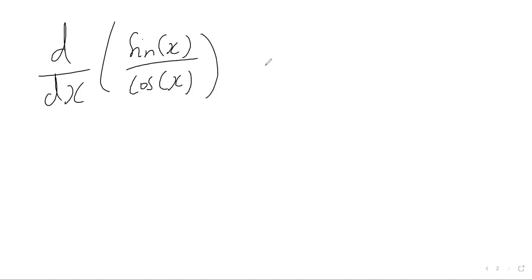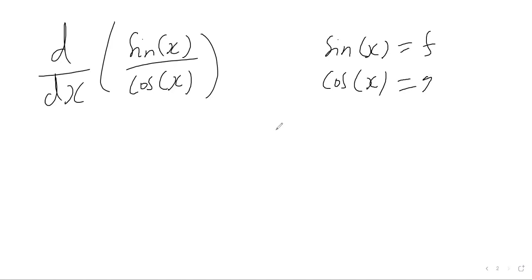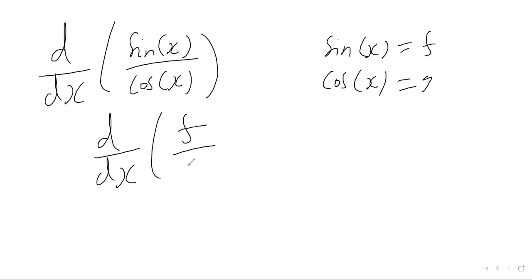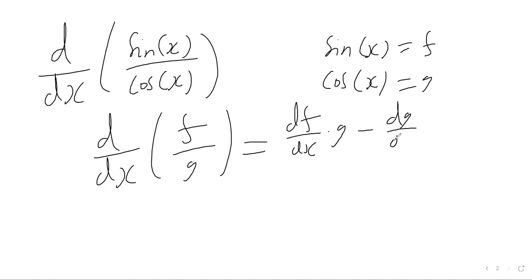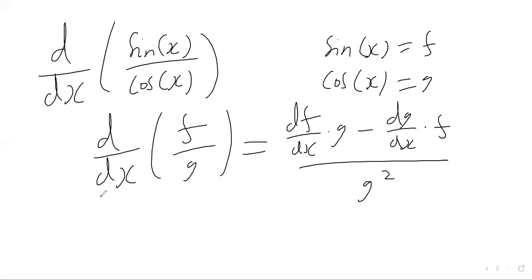We've got our function on the top, which we'll call f, so f is sine of x. We've got our function on the bottom, which we'll call g, so g is cos of x. From the previous lesson, when we differentiate f over g, this equals the derivative of f with respect to x multiplied by g, subtract the derivative of g with respect to x multiplied by f, all over g squared.